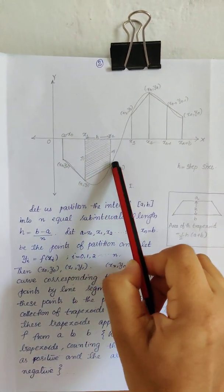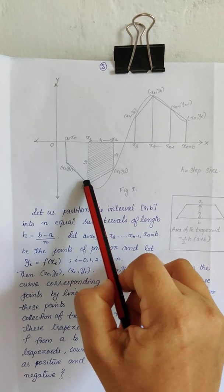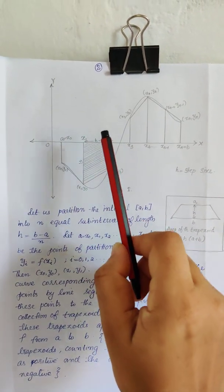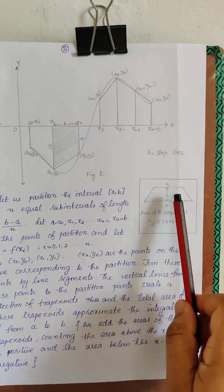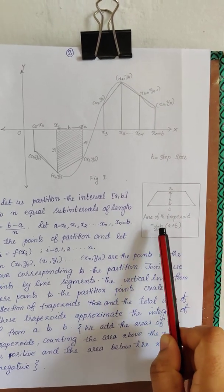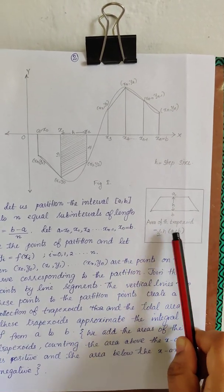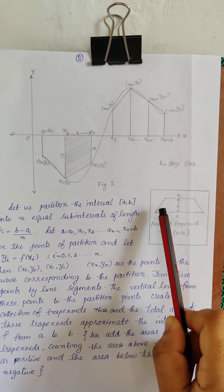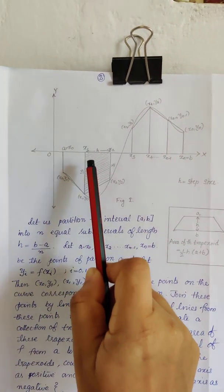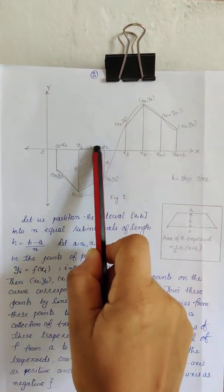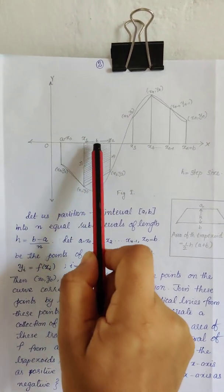Consider this shaded region. This shaded region is a trapezoid. And we know that area of a trapezoid is half h into a plus b, where a plus b are the lengths of the parallel sides. This is also a trapezoid, right, of height h.